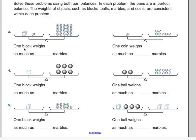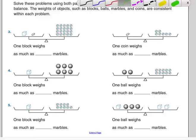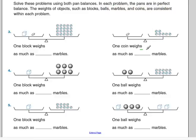When I look at here, we need to figure out one block weighs as much as how many marbles. Well, I've got only marbles on this side, but the problem is that on the left side, I've got one block and one coin. So I really can't figure out yet how many marbles a block weighs. But if I use my second balance, I can see that one coin weighs as much as two, four, six, seven marbles.